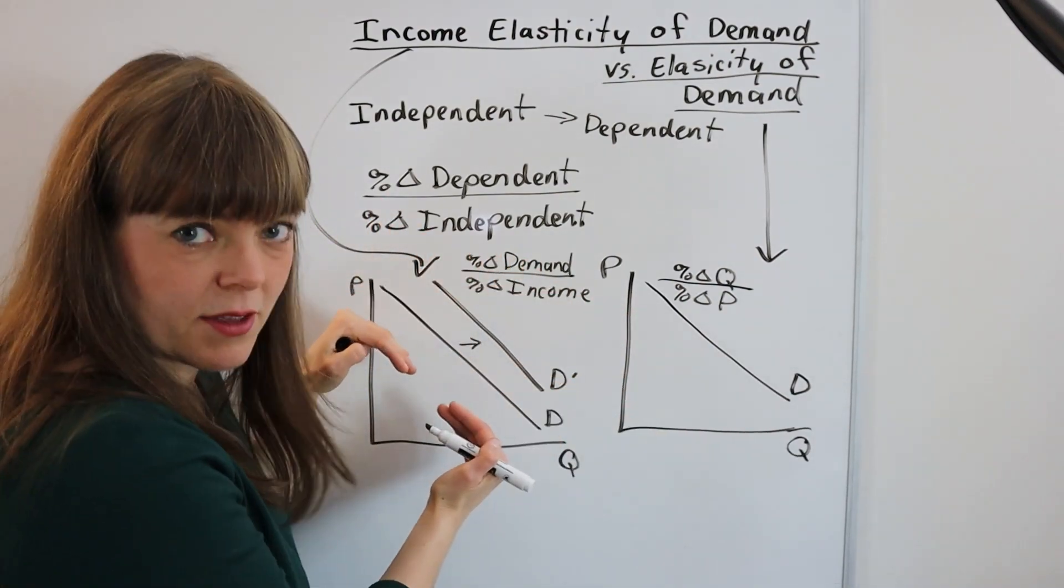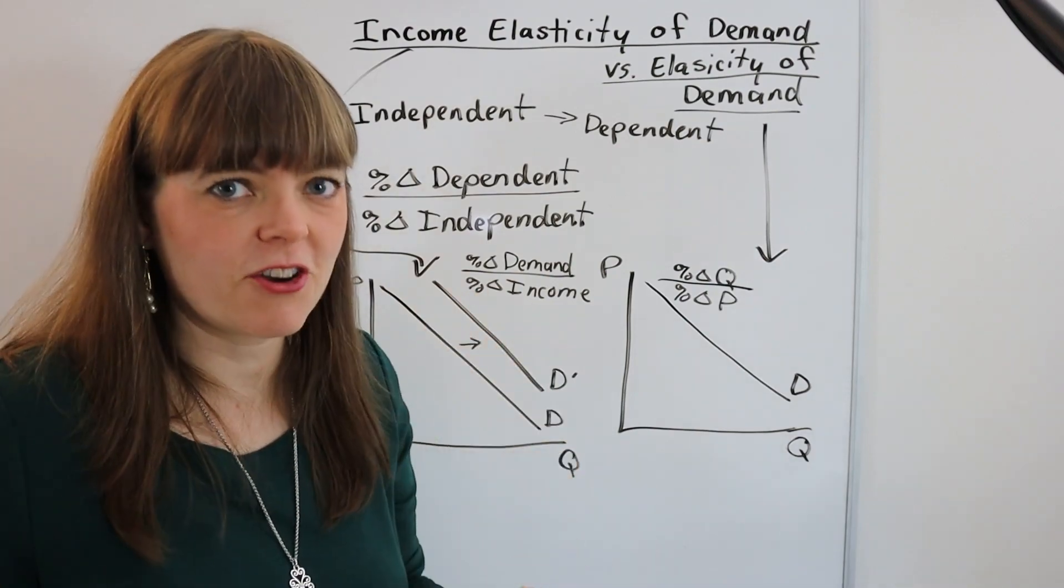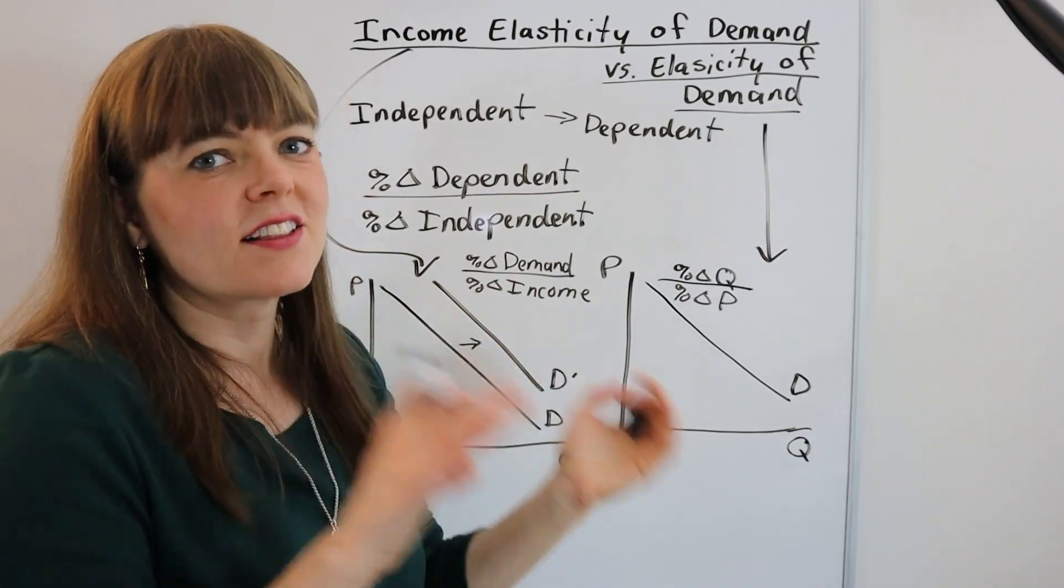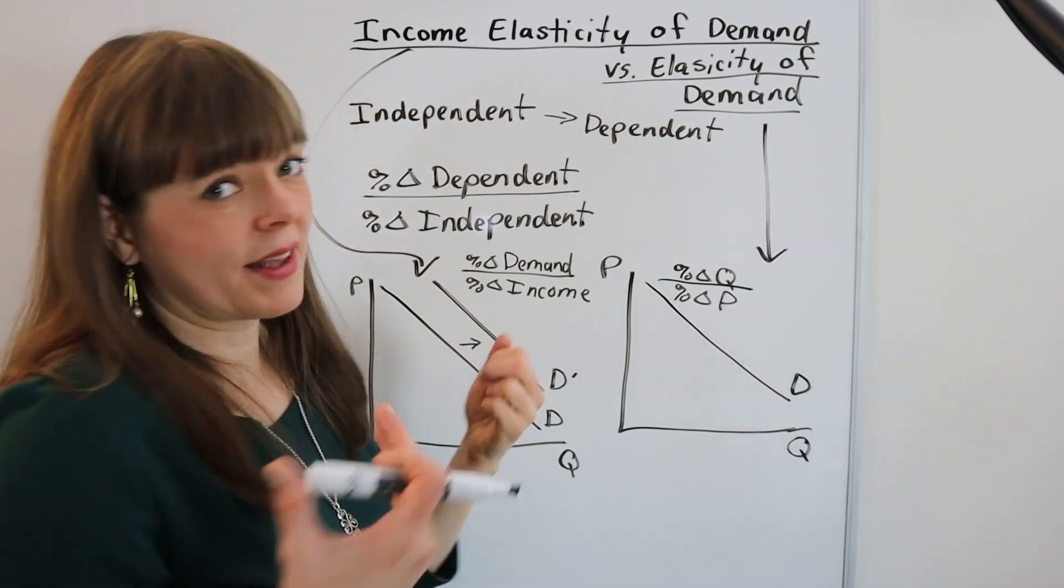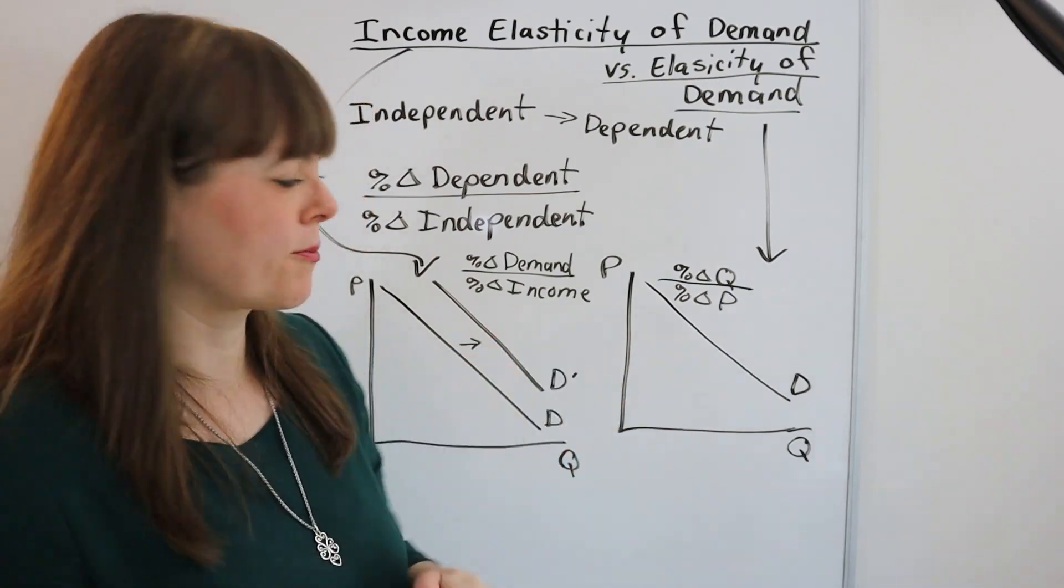Or do you demand less of the product? That means it's an inferior good. It's something that low income people buy that higher income people buy less of, like ramen noodles or peanut butter.